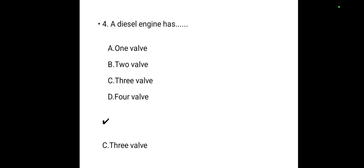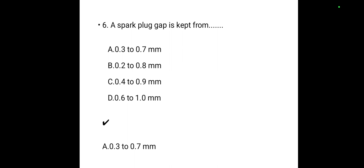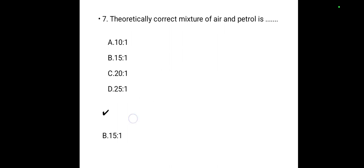A diesel engine has how many valves? The correct answer is three valves. If petrol is used in a diesel engine, higher knocking will occur — answer is C. A spark plug gap is kept at 0.3 to 0.7 mm — that is the correct answer.